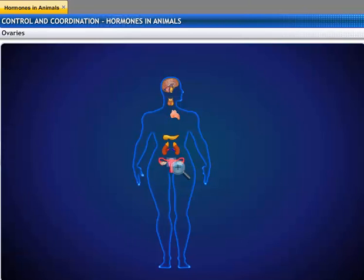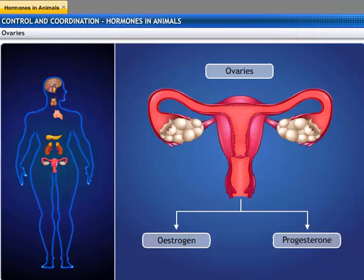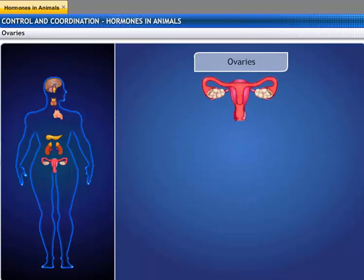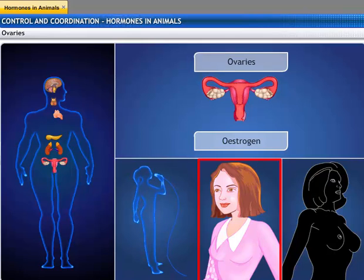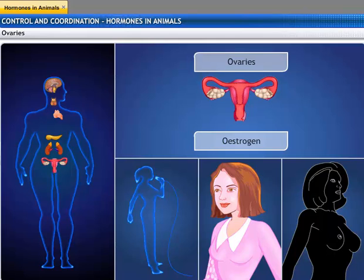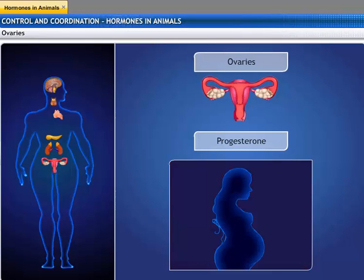A pair of ovaries is the female sex organ that lies in the abdominal cavity. They produce two hormones: estrogen and progesterone. Estrogen controls the changes that occur during puberty, like a feminine voice, soft skin, and mammary glands. Progesterone controls the uterine changes in the menstrual cycle and helps in the maintenance of pregnancy.